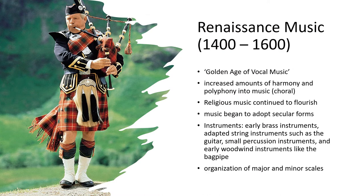The Renaissance brought significantly increased amounts of harmony and polyphony into music, as most composers were focused on choral music. It is considered the golden age of vocal music. Religious music continued to flourish throughout the entire Renaissance period, including new forms such as masses, anthems, psalms, and motets. Some composers of sacred music began to adopt secular forms, such as the madrigal, towards the end of the period. Instrumentation became more prominent during this period, with the introduction of early brass instruments, adapted string instruments such as the guitar, small percussion instruments, and early woodwind instruments like the bagpipe. The second half of the Renaissance period was incredibly influential, as composers began to move away from the modal system of harmony and towards the organization of major and minor scales.